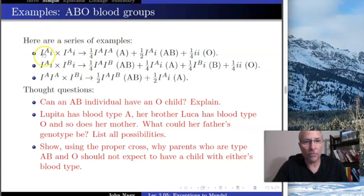Remember it's FOIL. It can be firsts, so that would be big I^A, big I^A. It could be outers, so big I^A, little i. Or it could be inners, little i, big I^A, which is the same as the previous one. So there are two different ways we can get big I^A, little i. So that's half of them.